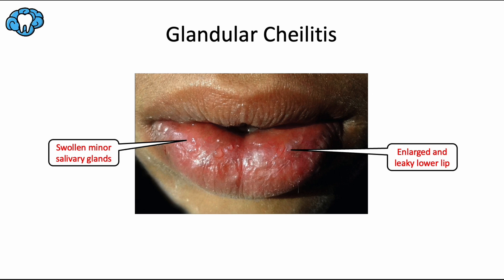And lastly, we have glandular cheilitis, also called cheilitis glandularis, which is an uncommon disease that usually affects the lower lip of adults. It's characterized by swollen minor salivary glands that cause enlargement and eversion of the lower lip, and secretion of clear, thick mucus — hence the leaky lower lip. The cause of glandular cheilitis is frankly unknown. Some believe it's developmental in origin, while others theorize it's related to sun exposure and lip biting.